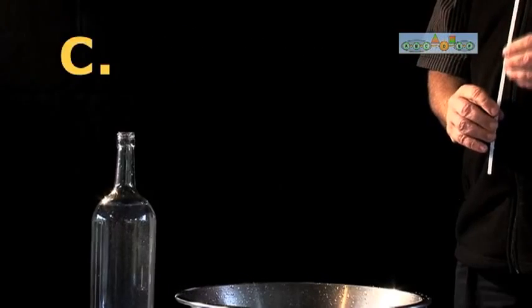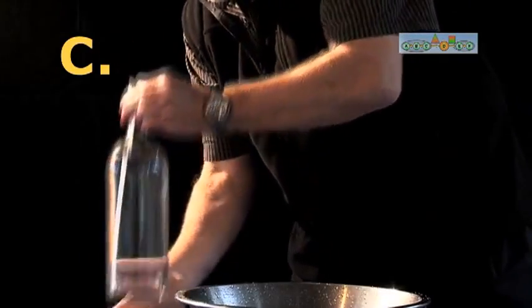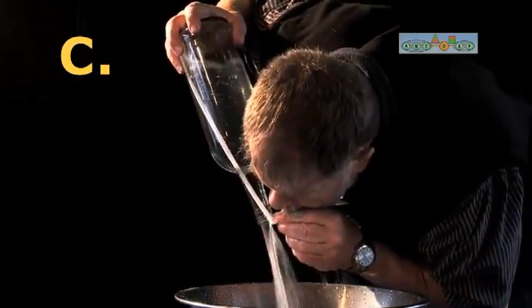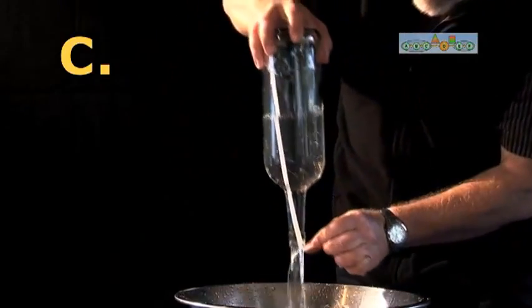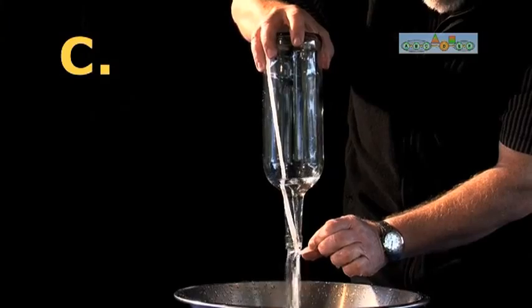The third demonstration. A straw is now added to channel the airflow. The bottle is overturned and air is blown through the straw to clear all the water from the straw. The pressure from the blowing also starts the process of flow.